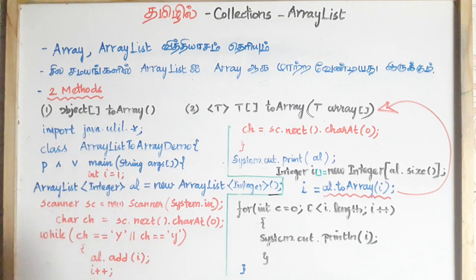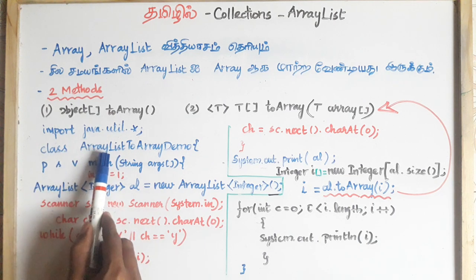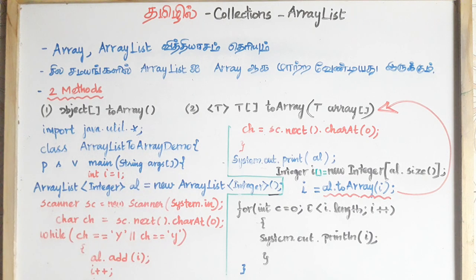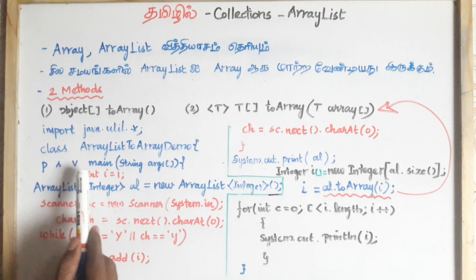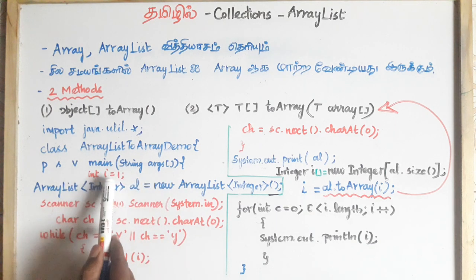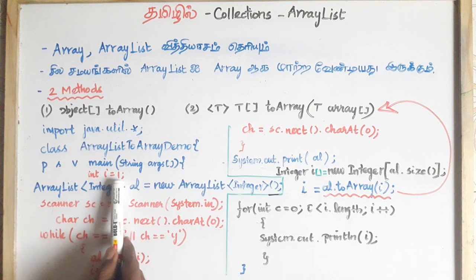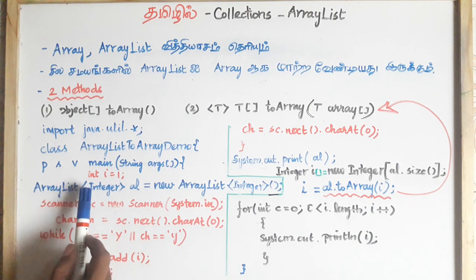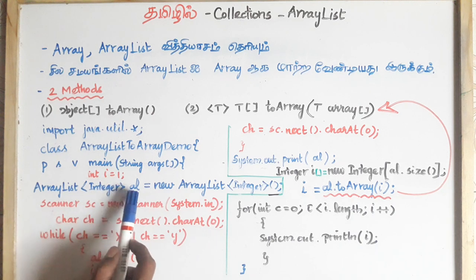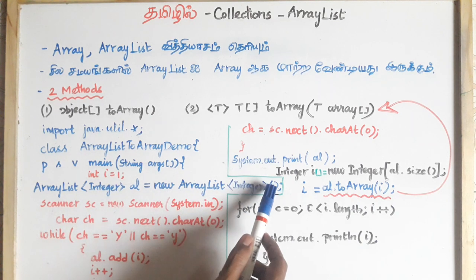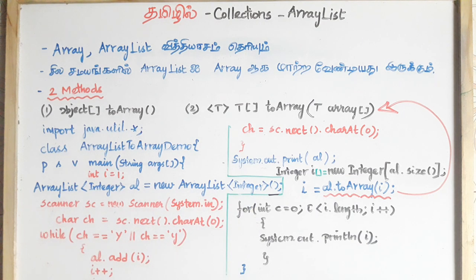I have a small program. You can use java.util and import ArrayList. The class name is ArrayDemo. We have a public static void main String array. There is an integer variable initialized. In this ArrayList there is a tag: ArrayList of Integer al equals new ArrayList of Integer. That is, it is a collection of heterogeneous elements, but I will restrict it.